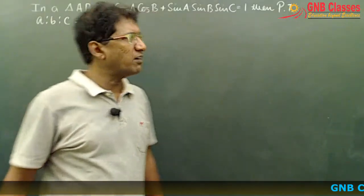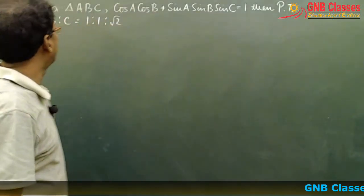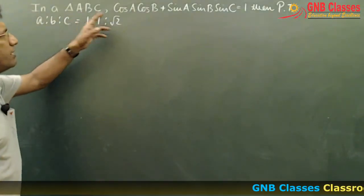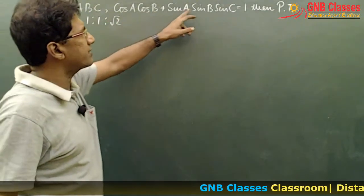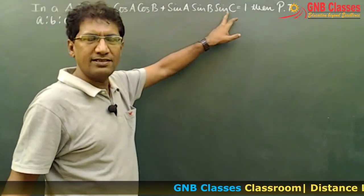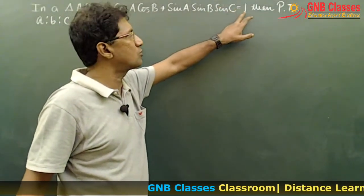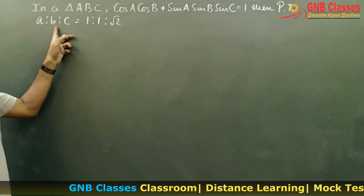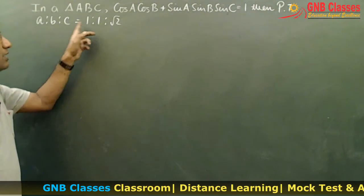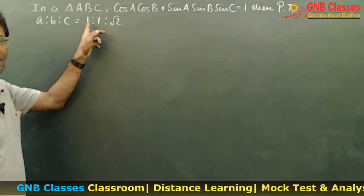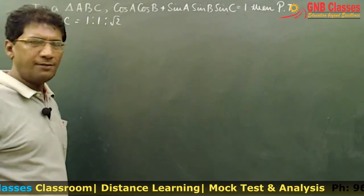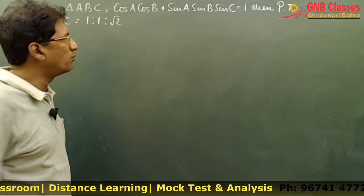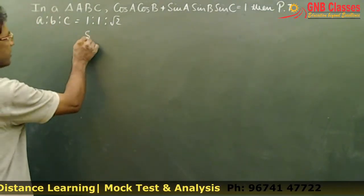In this problem, we are given that in a triangle ABC, if cosA·cosB + sinA·sinB·sinC equals 1, then prove that the ratio of the sides is 1:1:√2. A very interesting problem.